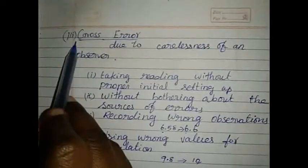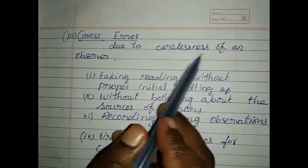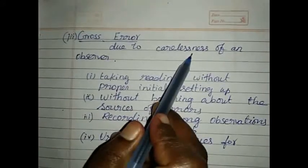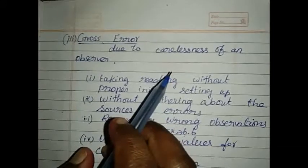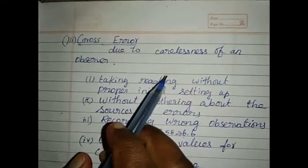The third type is gross error. This error occurs due to carelessness of an observer. There are many chances for making error by the observer. They are listed below.